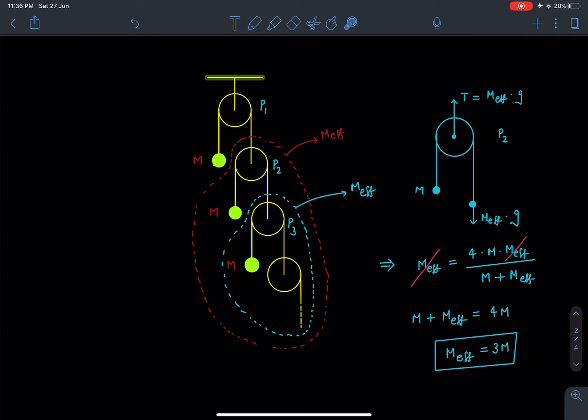If we simplify this part using the concept of M_eff again, we get M_eff = (4M·M_eff)/(M + M_eff). If we simplify this, we get M + M_eff = 4M.